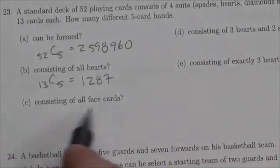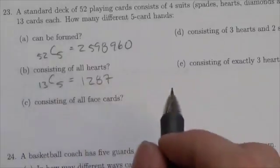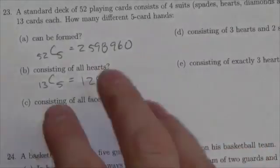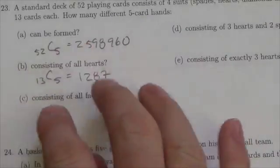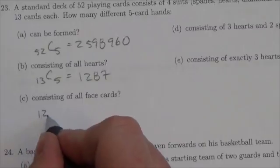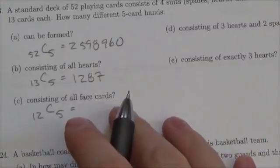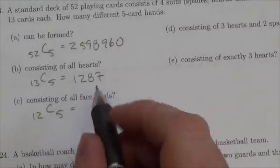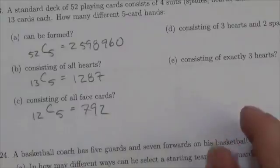Now, what if it's consisting of all face cards? What we mean by face cards is of those 13 cards in every suit, three of them have faces on them. So there are four different suits, and in each of those, there are three that have faces on them. So that's 12 cards, and I'm going to choose five of them to be in this hand that I'm dealing. When I do that, I get 792 different hands that have just face cards on them.